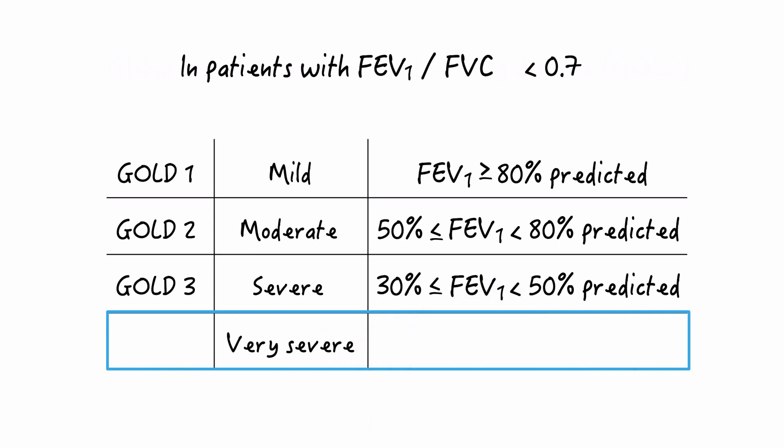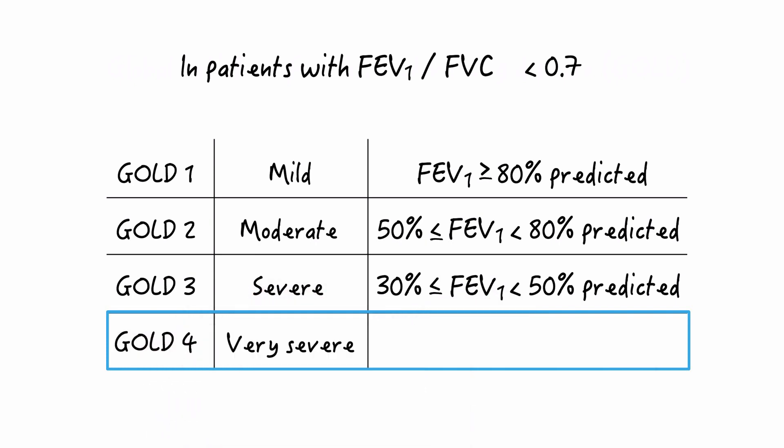And very severe obstruction, or GOLD four, is an FEV1 less than 30% predicted.